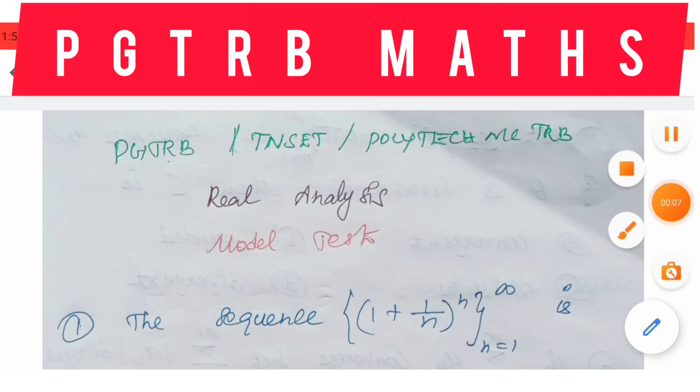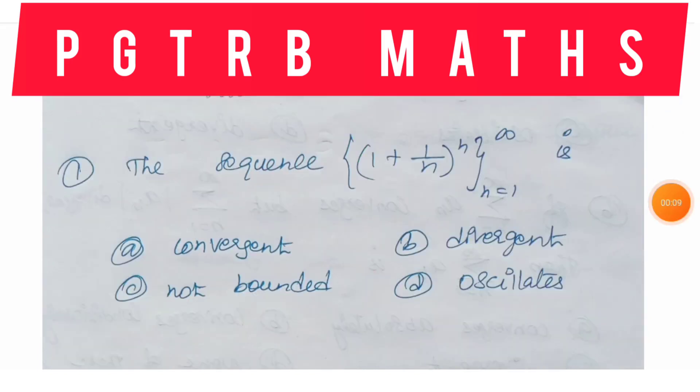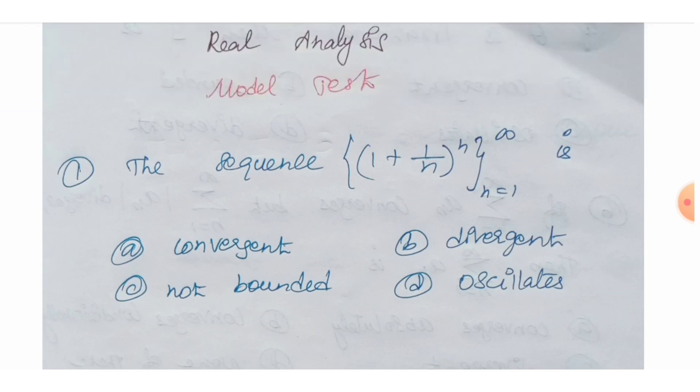First question: The sequence (1 + 1/n)^n, n = 1 to infinity. Option A: convergent. Option B: divergent. Option C: not bounded. Option D: oscillatory.